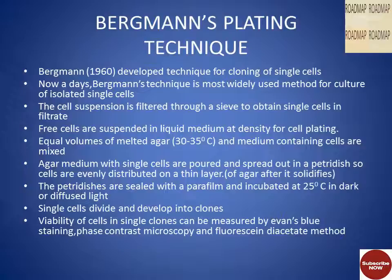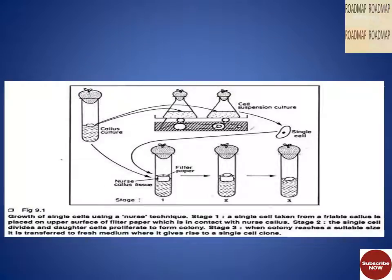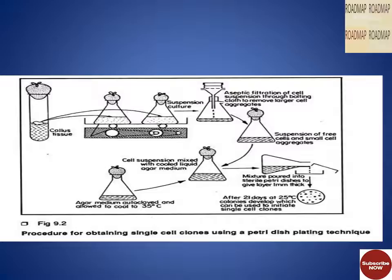This diagram shows the growth of single cells using the nurse technique. In this technique, a single cell is taken from a friable callus, which is placed on the upper surface of filter paper in contact with the nurse callus. The single cell divides and daughter cells proliferate to form a colony. When the colony reaches a suitable size, it is transferred to fresh medium where it gives rise to a single cell clone.